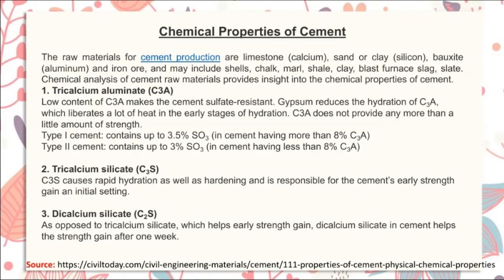Chemical properties of cement: raw materials include limestone, calcium sand or clay, bauxite, calcium aluminium, iron ore, shells, chalk, marl, clay, and blast furnace slag. Tricalcium aluminate (C3A): a low content of C3A makes cement sulfate resistant. Gypsum reduces the hydration of C3A, which liberates a lot of heat in early stages. C3A provides little strength. Type 1 cement contains up to 3.5% SO₃ in cement having more than 8% C3A; type 2 cement contains up to 3% SO₃ in cement having less than 8% C3A.